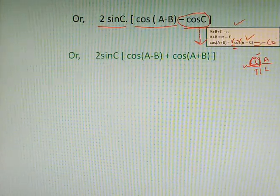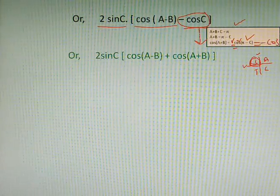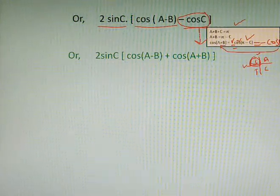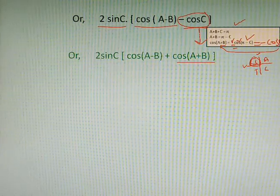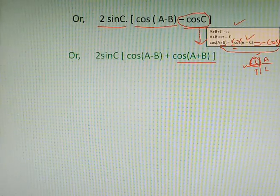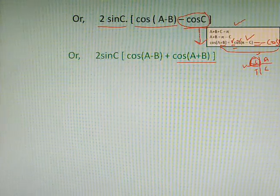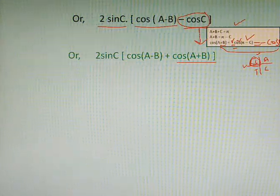cosC can be written as cos(A+B), as we can see here. That's why we have written +cos(A+B) in place of -cosC. Now moving to the next step.